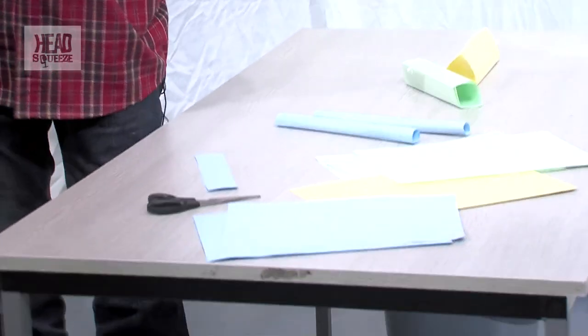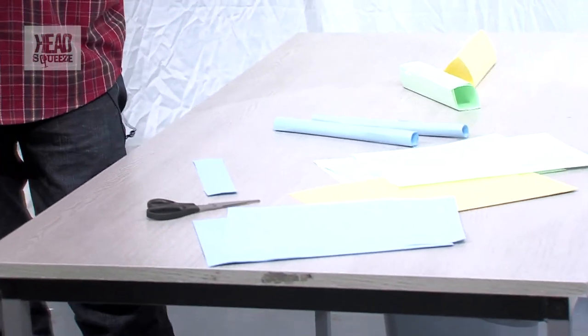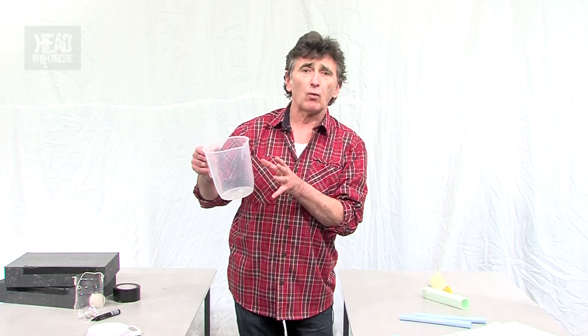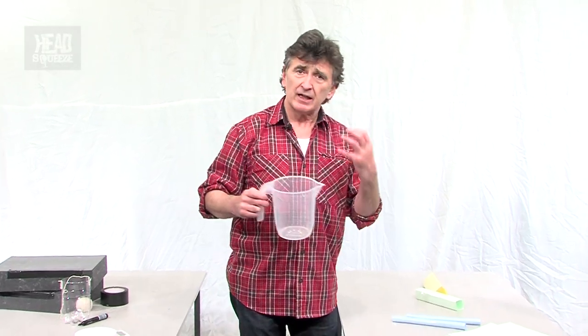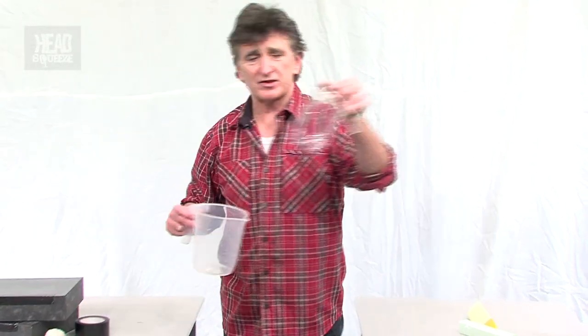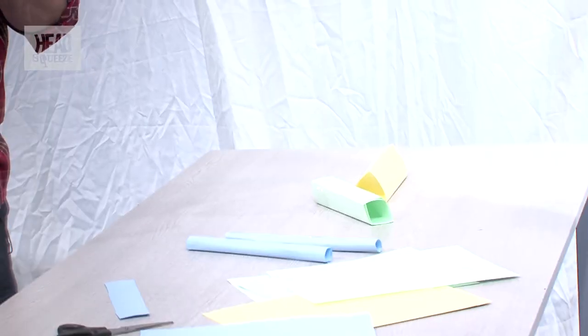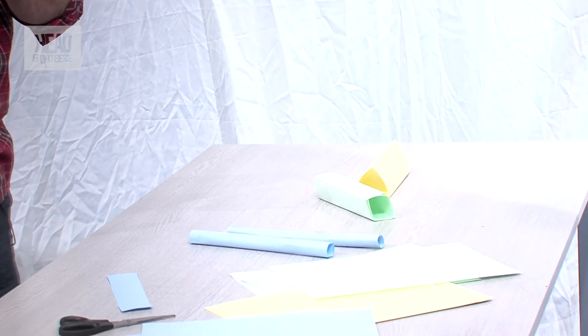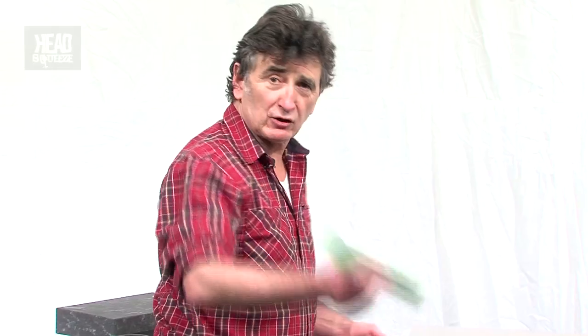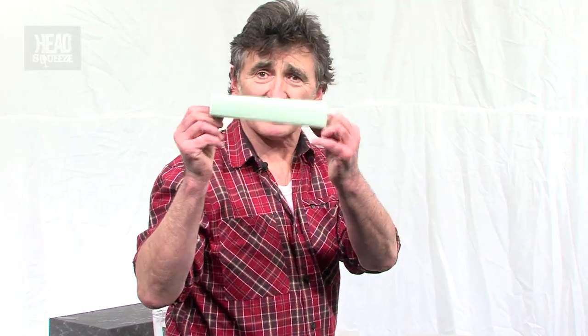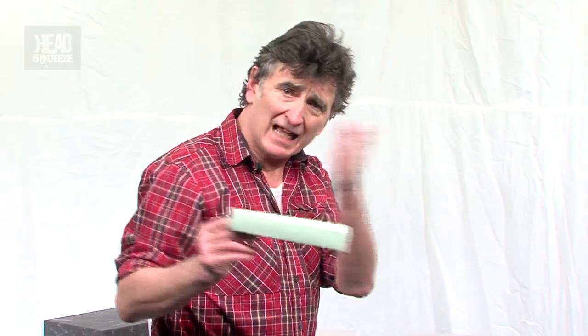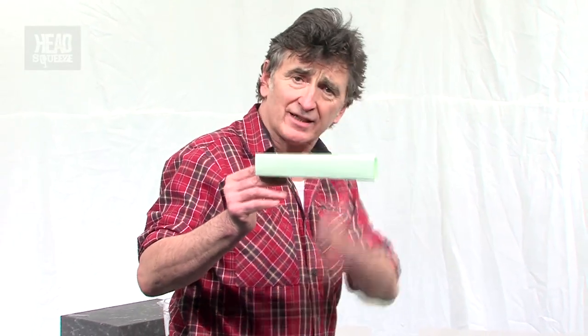To test these structures, what I need is weight. And the weight I'm going to use is water. I'm going to get a given amount of water. I'm going to pour it into a suspension, if you like, into a suspended jug and see how much water it takes for each of these structures to collapse. I've got my shapes and they're only this long. So I need to create a chasm in order to span these so that we've got a weight in the middle, which will do the test for us.